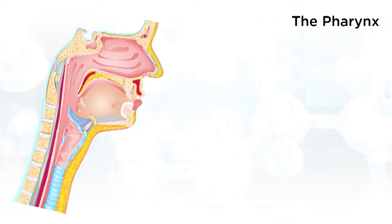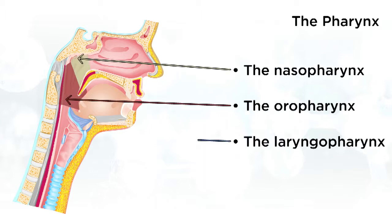If we take a look at the pharynx, you can see that it is divided up into three different areas: the nasopharynx, the oropharynx, and the laryngopharynx.